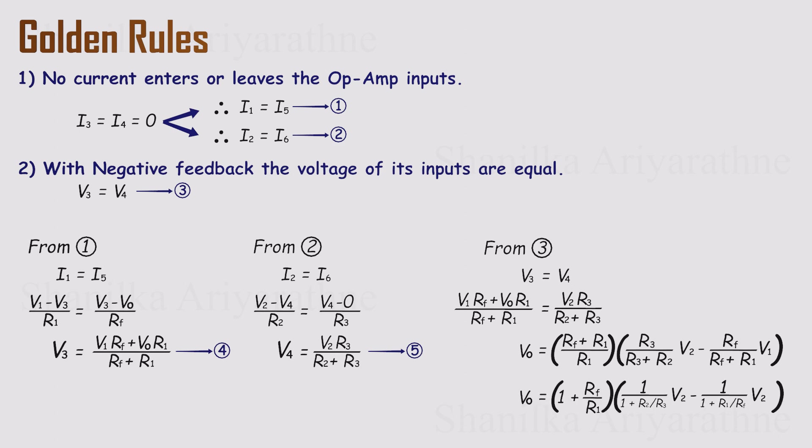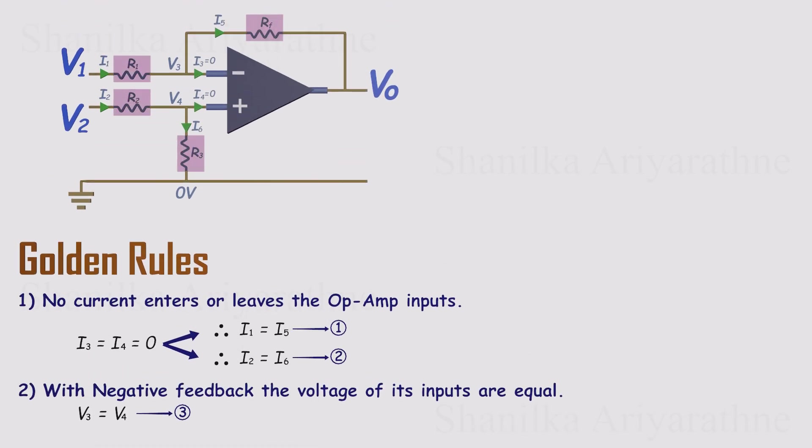You'll get a bulky looking expression, but it can be simplified. Here's the trick. Notice the fractional terms. Each one is really just a ratio between two resistor values. That's the key to cleaning things up. So let's make a smart assumption. Set RF over R1 equal to R3 over R2.